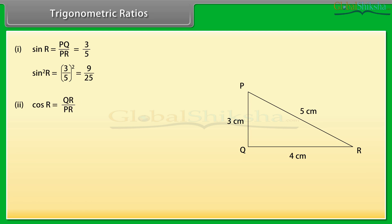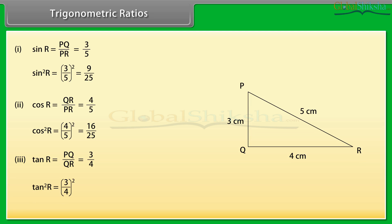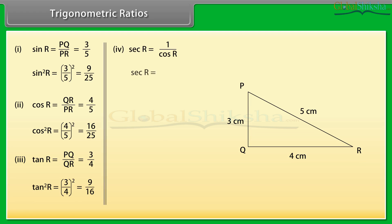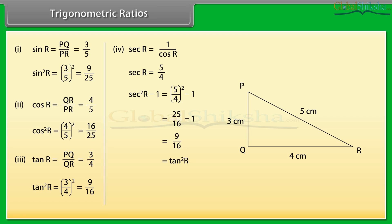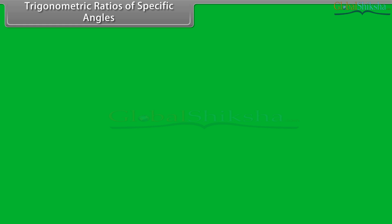Cos R equals QR upon PR, which equals 4 upon 5. Cos²R equals (4 upon 5)², which is 16 upon 25. Tan R equals PQ upon QR, which equals 3 upon 4. Tan²R equals (3 upon 4)², which is 9 upon 16. Sec R equals 1 upon cos R, which is 5 upon 4. Sec²R minus 1 equals (5 upon 4)² minus 1, which equals 25 upon 16 minus 1, giving 9 upon 16, which equals tan²R.